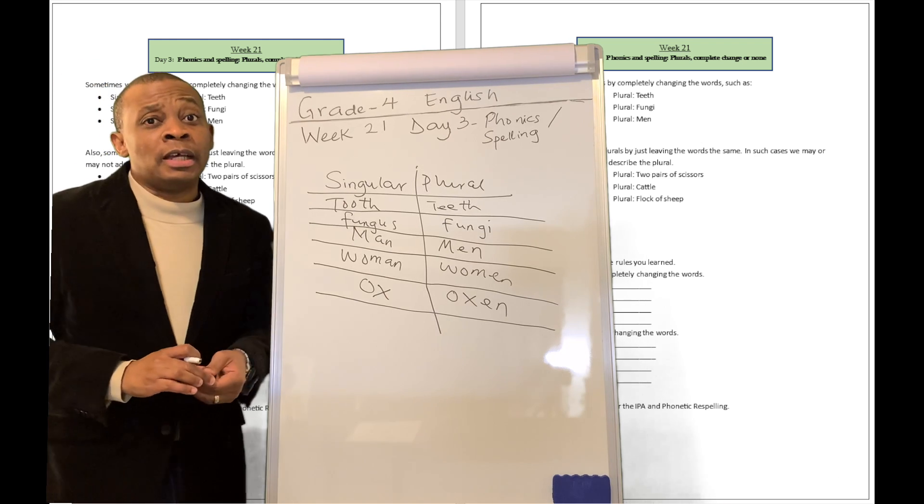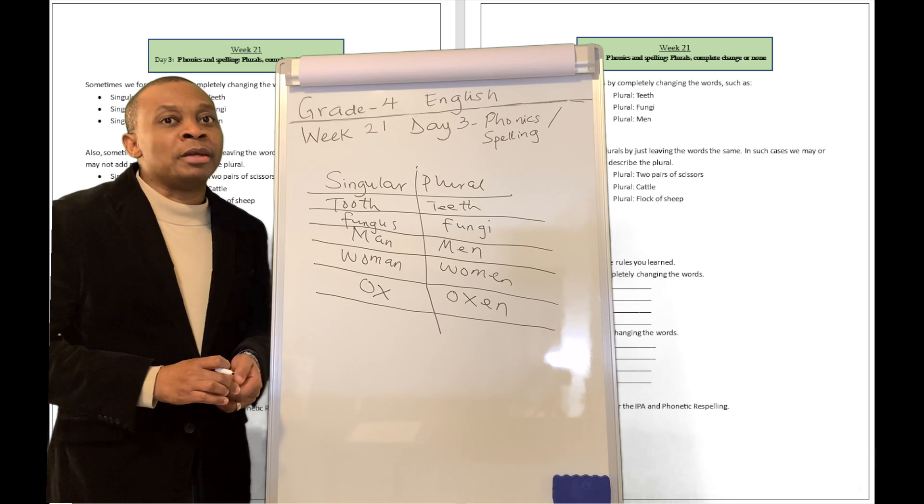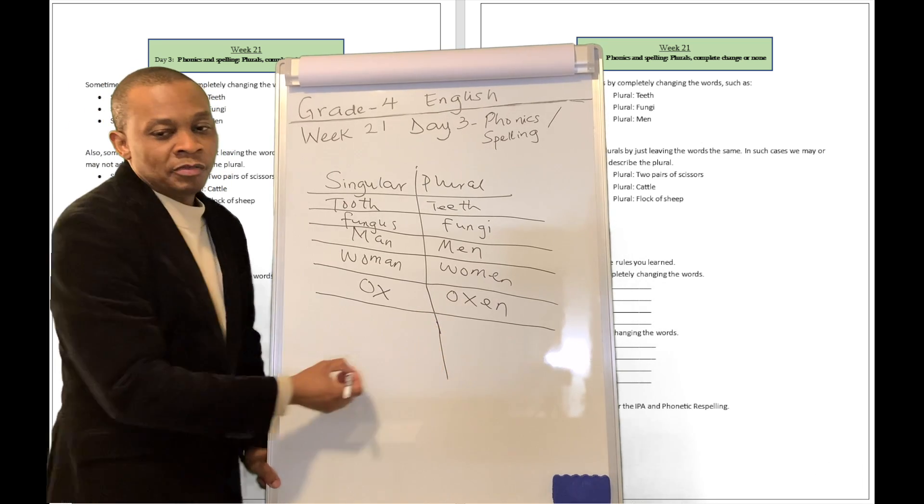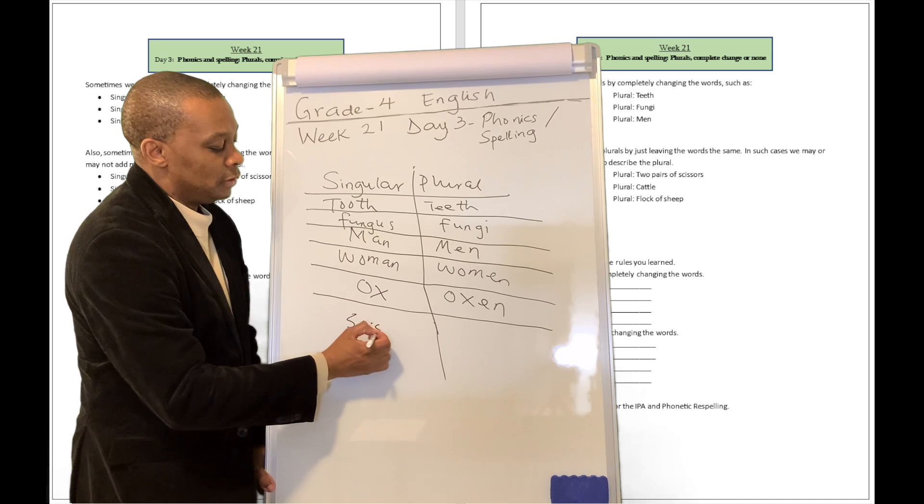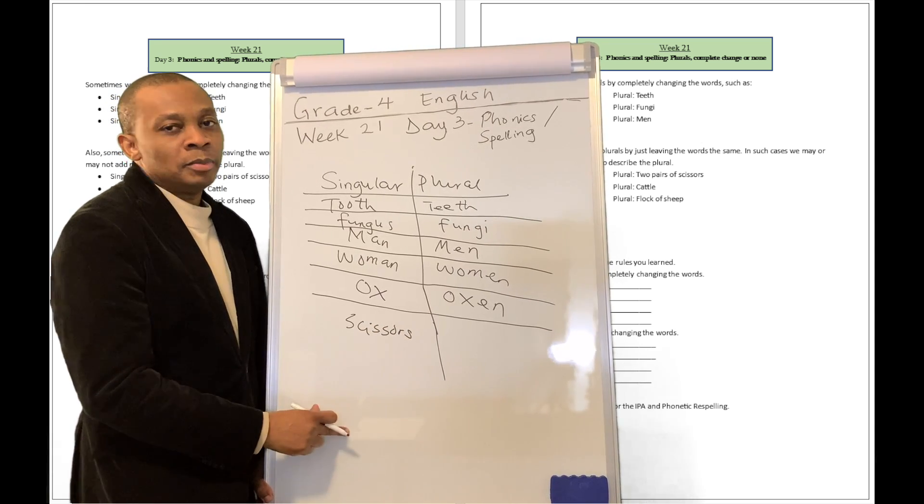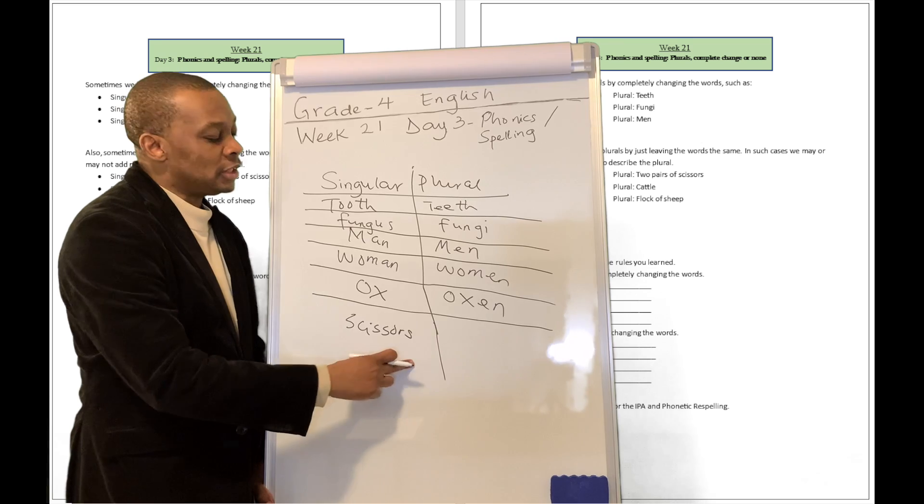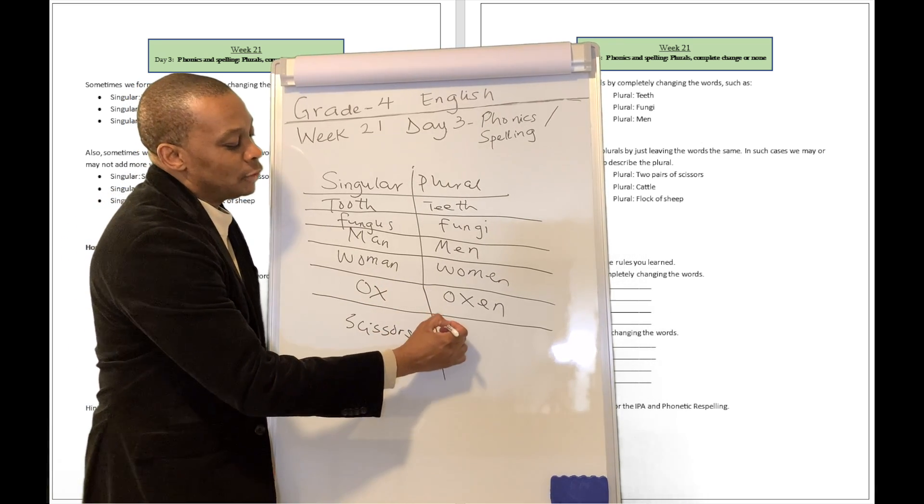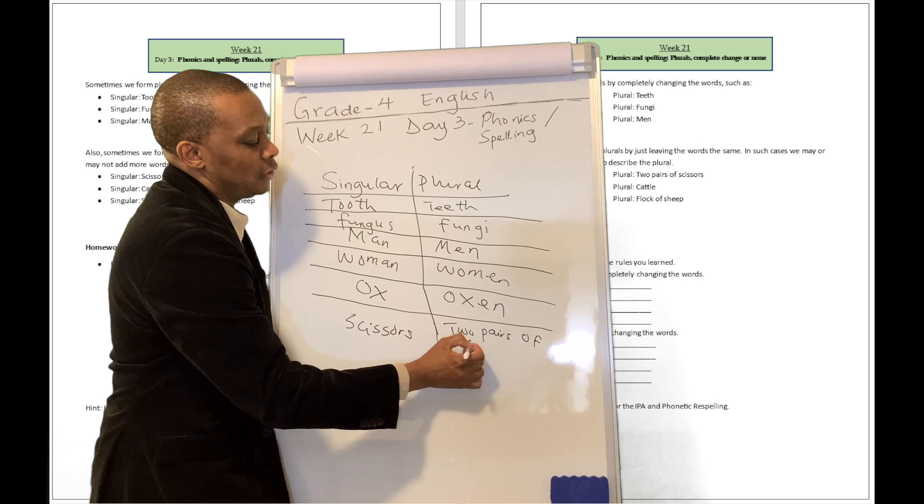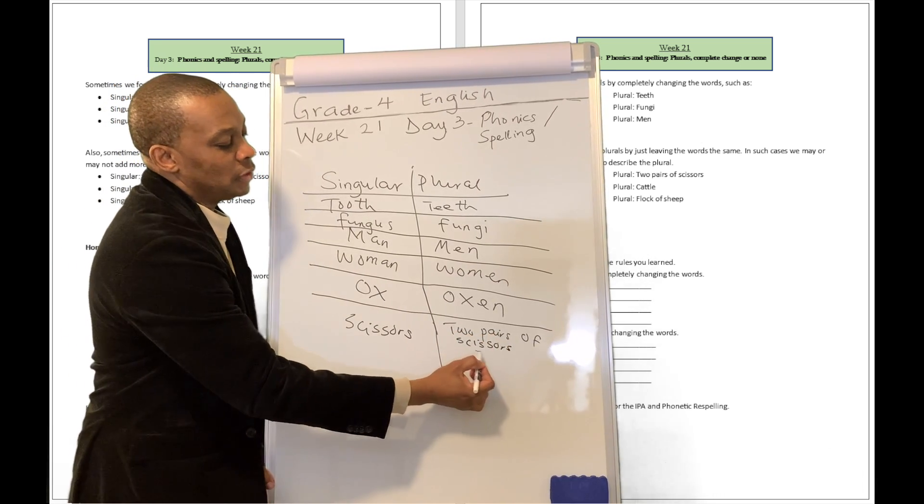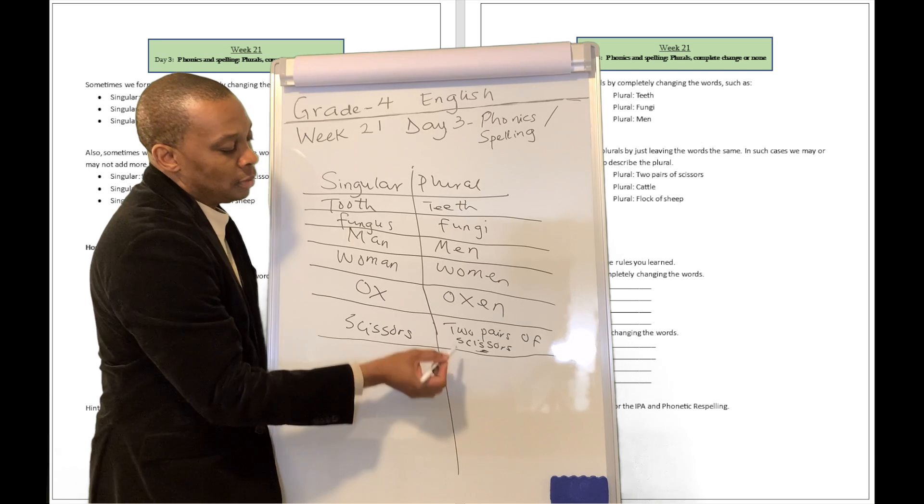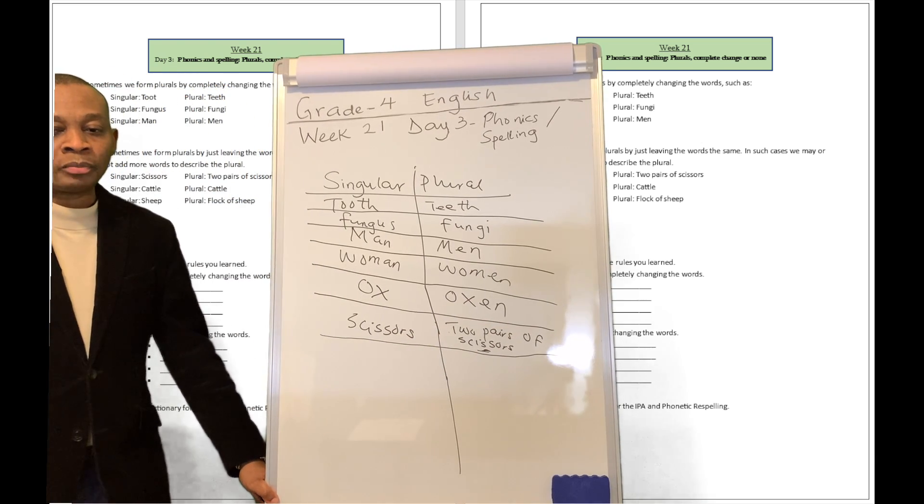And then there are times that some words just stay the same, but you add additional words to show that you're talking about multiple counts of those objects. So, for example, if you were to say scissors, this is the singular spelling of the word scissors. But then you're not going to say scissorses. What you say is two pairs of scissors. So the word still stays the same, but to show that you're talking about multiple counts of an object, you're going to put two pairs of scissors over there.